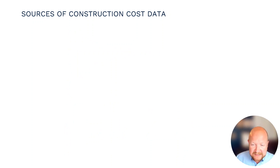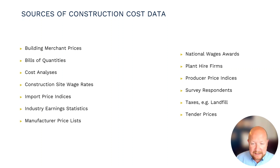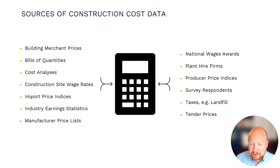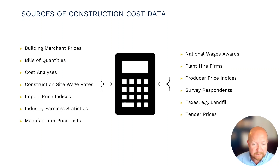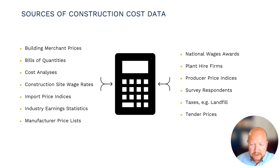Not all cost data is created equal. You might be pulling in numbers from a range of sources, some more reliable than others, and what you're ideally looking for is credible data. The sources used in BCIS products and cost calculations range from producer price indices — some not publicly available — through prices from building merchants used to update our estimating guides, statistics from the ONS, and data from our own subscribers for bill of quantities and cost analyses. These sources are also useful for considering the most significant cost drivers now and likely to be in the future.